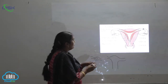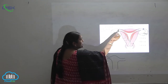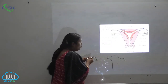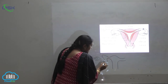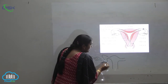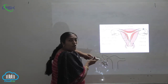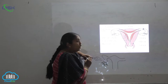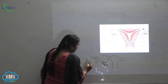This is the fundus region, and you can see the tube-like structures. They end as finger-like structures at the posterior region. This is called the fallopian tubule.